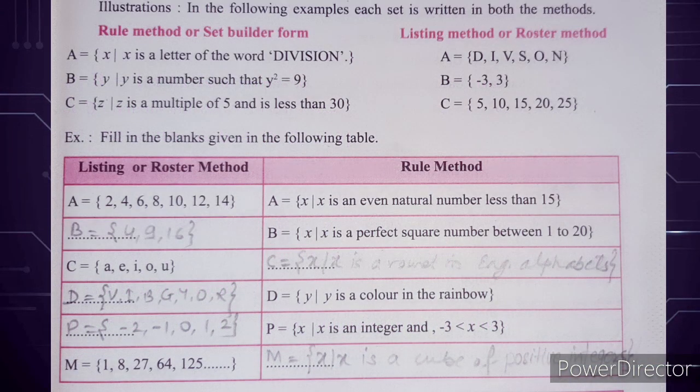Now let's look at examples converting between rule method and listing method. First: A is the set of all x where x is a letter of the word 'division.' The letter i is repeated three times, but we write each only once. So the set is {D, I, V, S, O, N}.